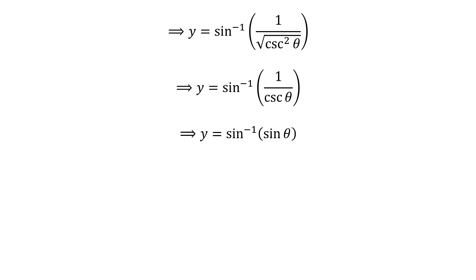We know 1 upon cosecant of theta is equal to sine of theta. So, y is equal to inverse of sine of sine of theta. Application of inverse function properties gives us y is equal to theta.